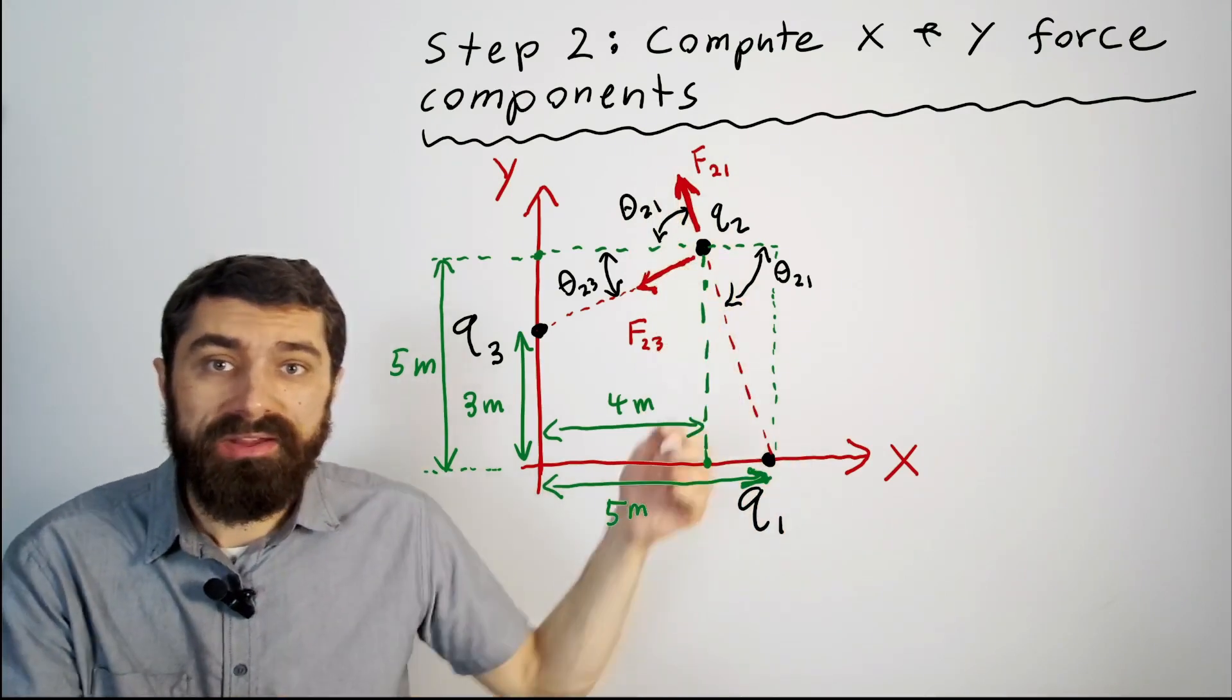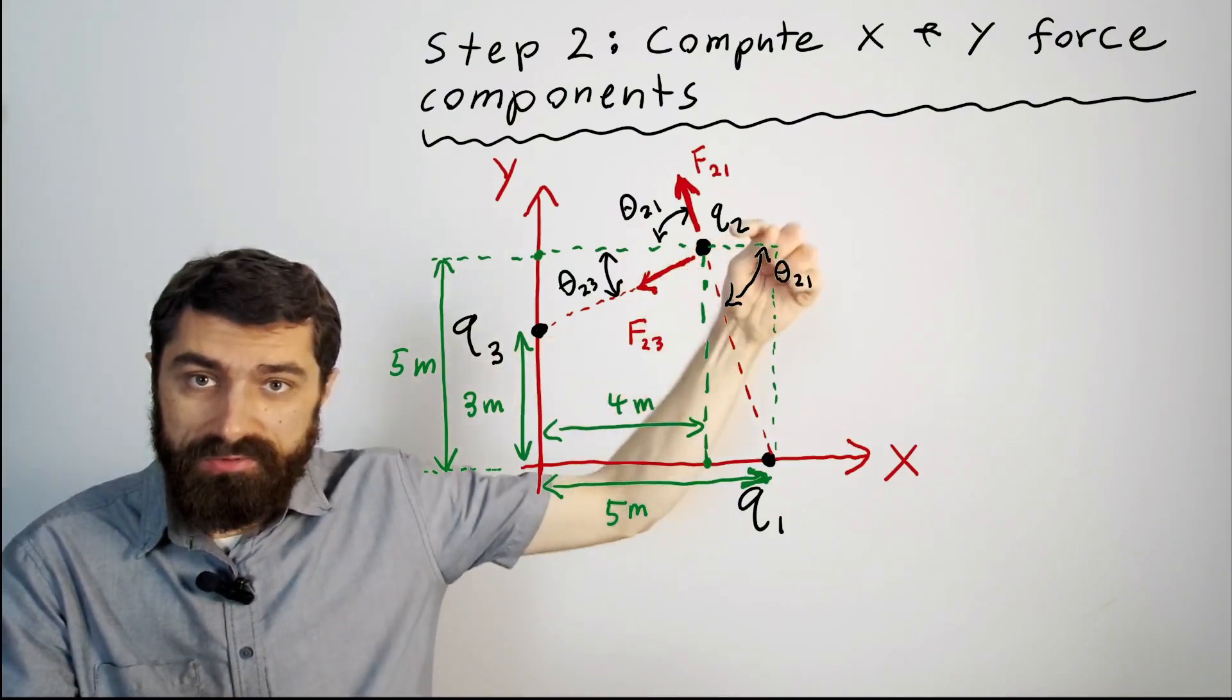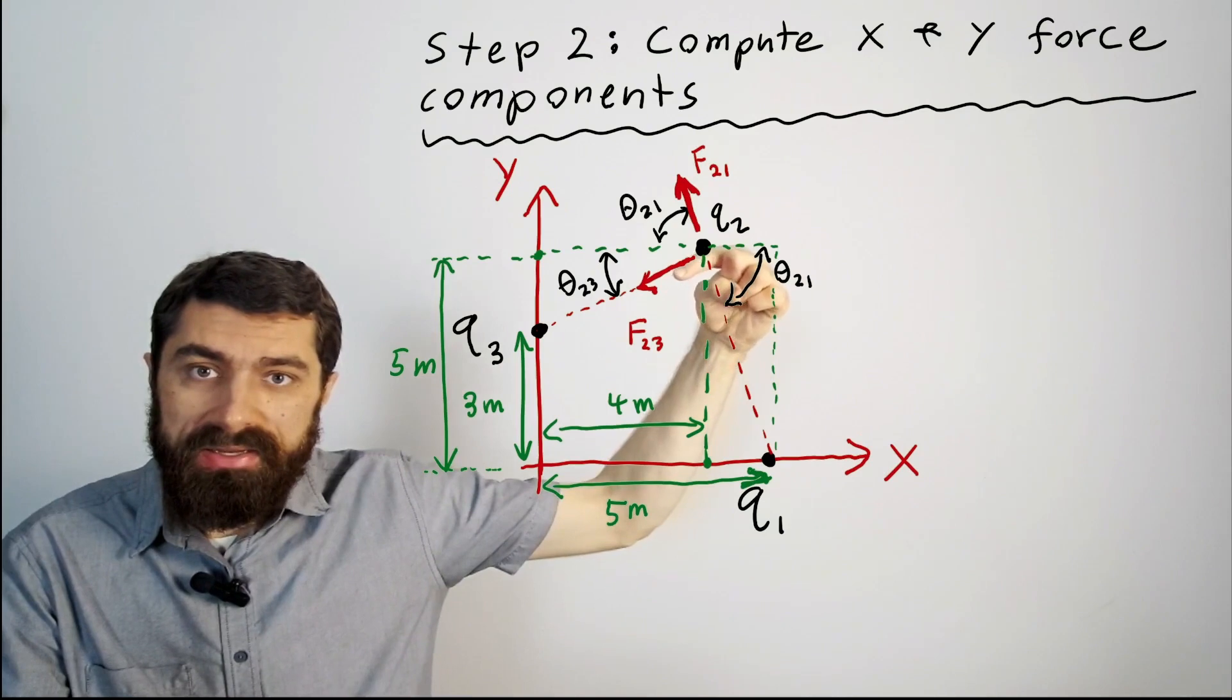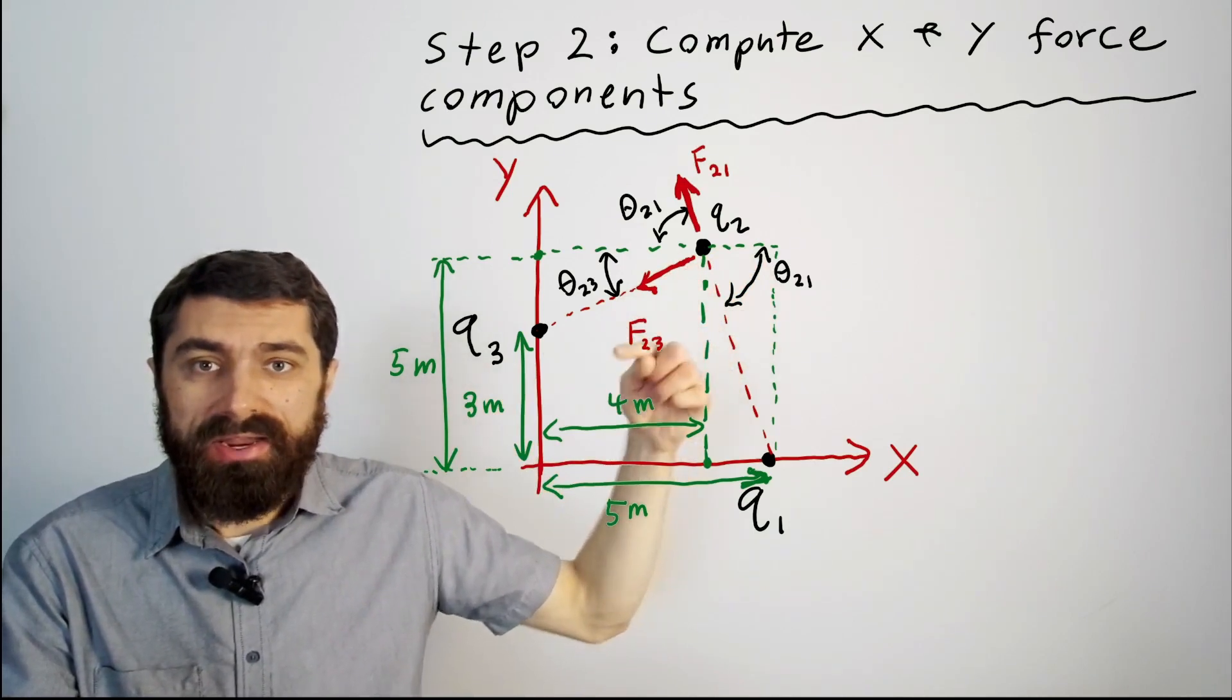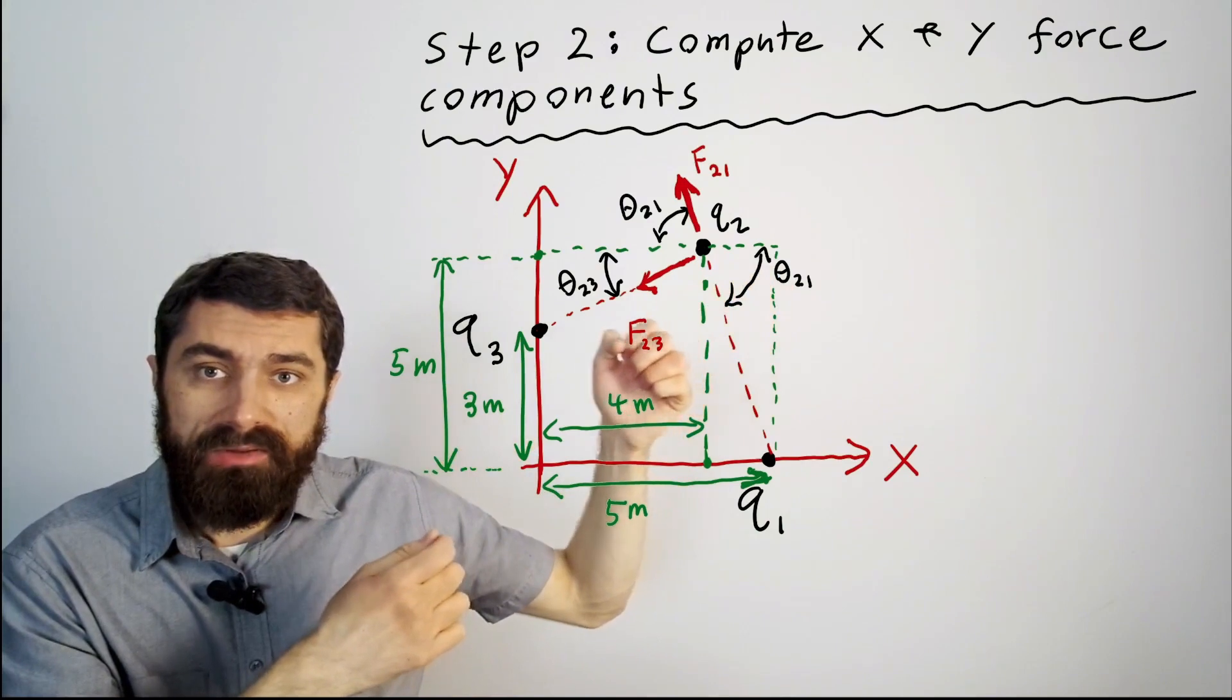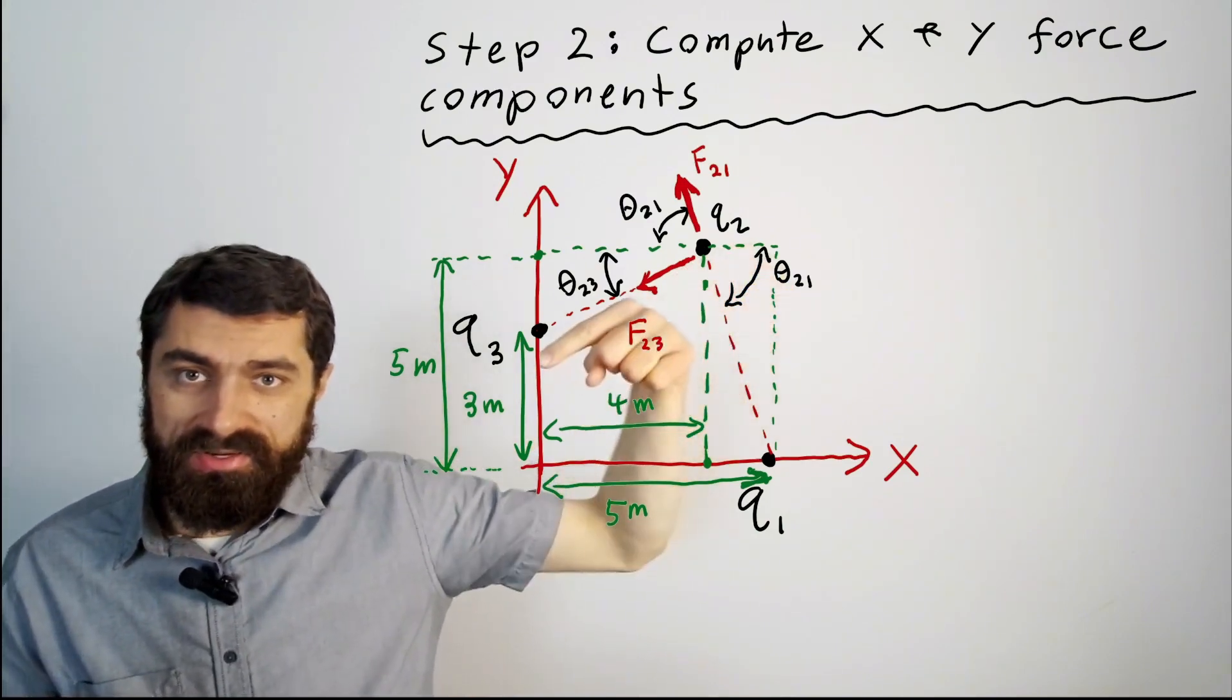In a similar way f23 is going to be on the line between q3 and q2 only the force is going to be downward in this direction and that's because q3 is negative q2 is positive. And so there's a force of attraction when you have plus and minus it's always attractive. So the force is in this direction.